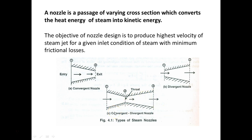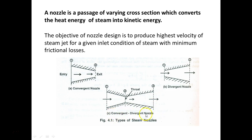Depending on the outlet velocity required, you have to select the convergent nozzle or convergent-divergent nozzle. The divergent nozzle is not practically used. If the flow velocity at the outlet is subsonic, then we use the convergent nozzle. When the flow velocity at the outlet is supersonic, then we use the convergent-divergent nozzle.